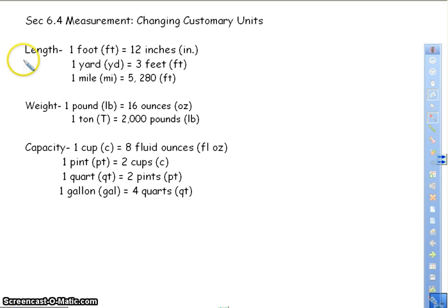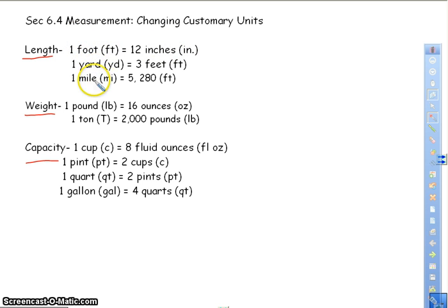Customary units include three different measurements: length, weight, and capacity. We measure length in inches, feet, yards, and miles. These are the conversions we're going to be using. We don't expect you to memorize these conversions — on ISTEP, they actually give you an ISTEP sheet with all the conversions on them. But you need to make sure you understand how to use them.